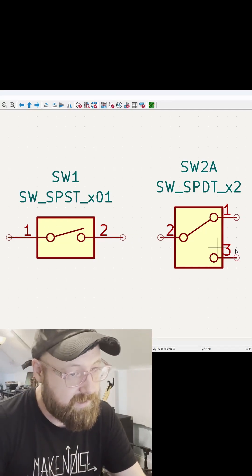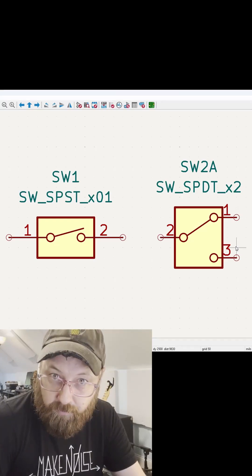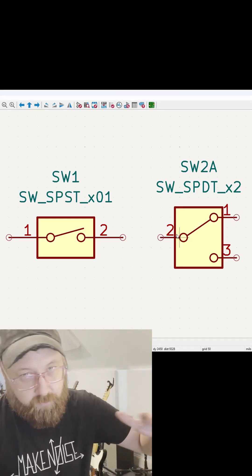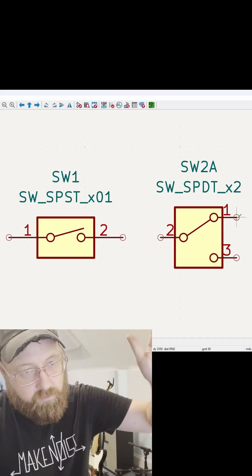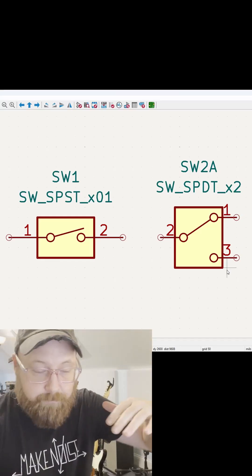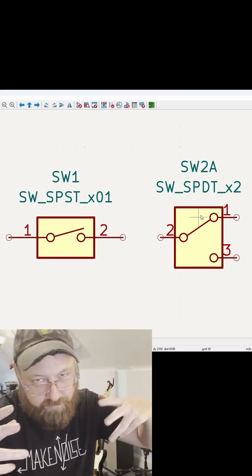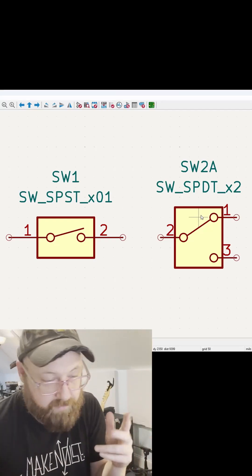Now the one beside it is a single pole double throw because it'll take whatever signal and send it to either one or three, right? A or B. There's all kinds of combinations of single pole, double throw, triple throw, all kinds of stuff.